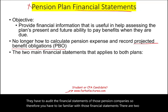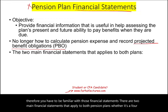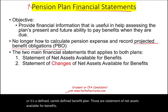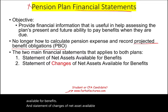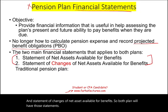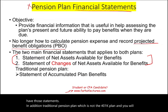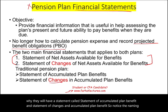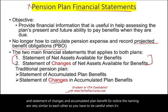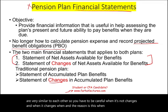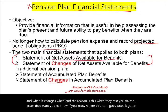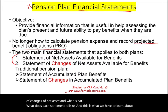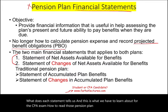There are two main financial statements that apply to both pension plans — whether it's a 401k or a defined benefit plan. These are: the Statement of Net Assets Available for Benefits, and the Statement of Changes in Net Assets Available for Benefits. In addition, the traditional pension plan — not the 401k — also requires a Statement of Accumulated Plan Benefits and a Statement of Changes in Accumulated Plan Benefits.